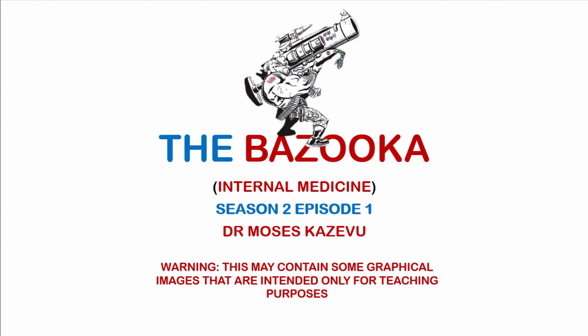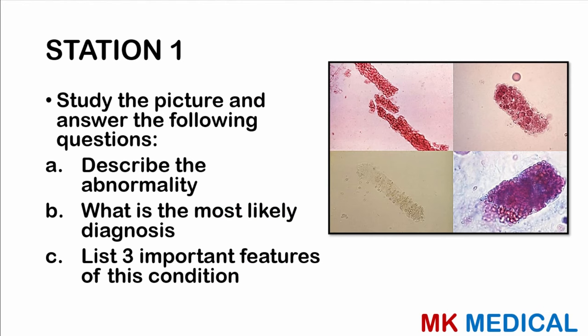Beginning with Station 1: study the picture and answer the following questions. Part A, describe the abnormality. Part B, what is the most likely diagnosis? Part C, list three important features of this condition. I'll give you two seconds to look at the picture and answer the following questions. You may pause the video if you wish.